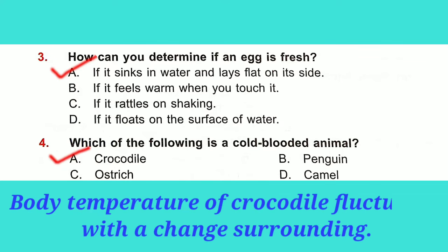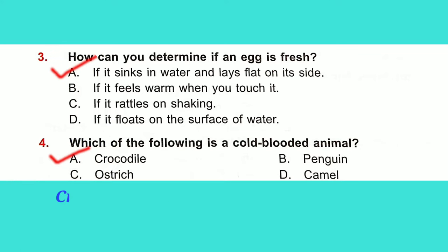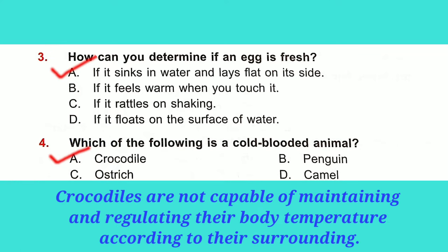The body temperature of crocodiles fluctuates with a change in surroundings. Crocodiles are not capable of maintaining and regulating their body temperature according to their surroundings. This is the reason cold-blooded animals cannot survive in extreme conditions. Thus, the crocodile is called a cold-blooded animal.